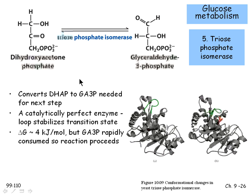Of the two three-carbon fragments from aldolase, only glyceraldehyde-3-phosphate is directly useful for the rest of glycolysis. Dihydroxyacetone phosphate must be converted to glyceraldehyde-3-phosphate by triose phosphate isomerase. This enzyme has been described as catalytically perfect — operating near the rate of molecular collisions. Its free energy change is slightly positive, but glyceraldehyde-3-phosphate is consumed so rapidly that the reaction is drawn forward.